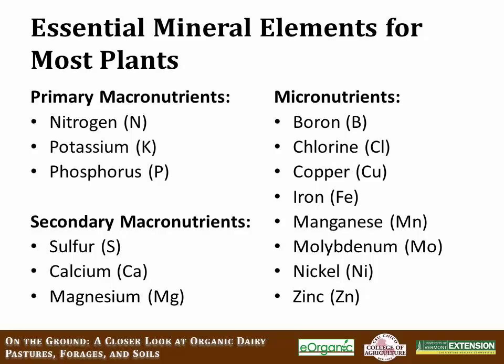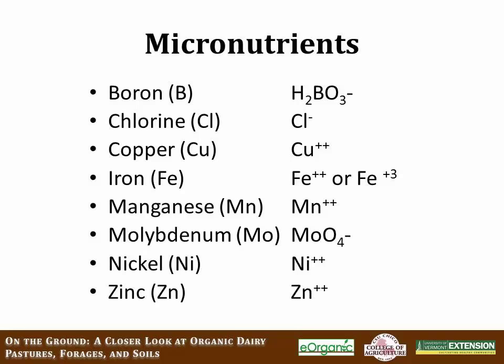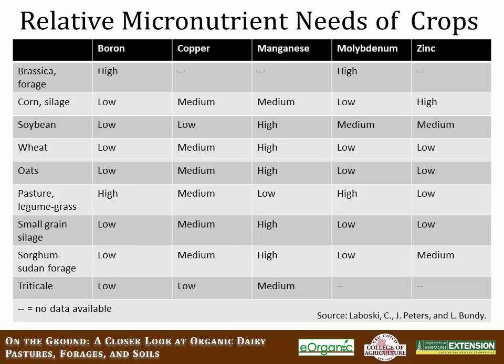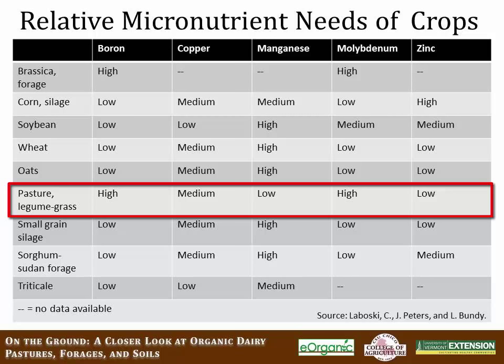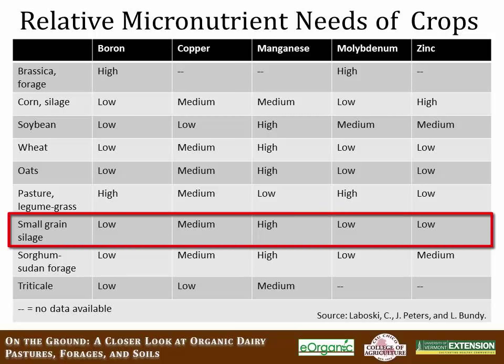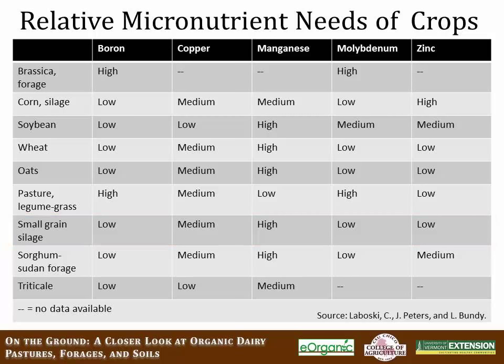This slide shows the micronutrients in their plant-available form. All crops require varying levels of micronutrients. On organic dairy farms, pastures with legumes require lots of boron, which legumes have high requirements for, and also molybdenum — a micronutrient utilized by nitrogen-fixing bacteria associated with legumes. Grasses, like small grain silage, have relatively low requirements for boron. Understanding if a crop has a higher need for a micronutrient is important, because in those cases it may be necessary to add micronutrients to maintain overall crop productivity.